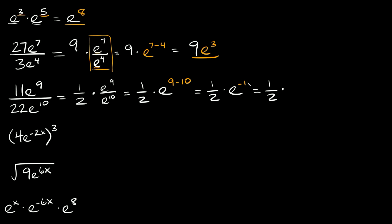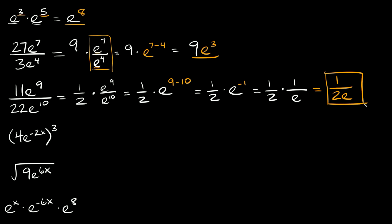Whenever you have a negative exponent, all you have to do is write this as one over and put the whole thing in the denominator, turning the exponent positive. So down here we have e raised to the positive first power, which is simply e. So one half times one over e is just equal to one over two e — that's our answer.